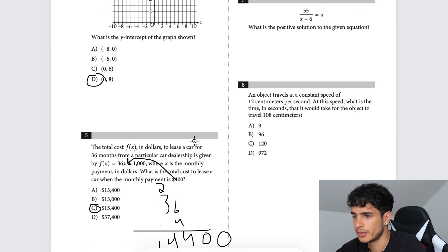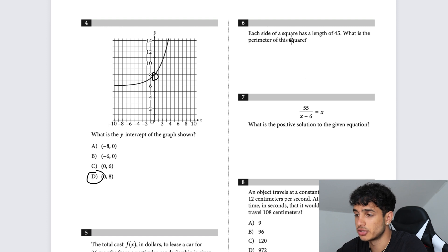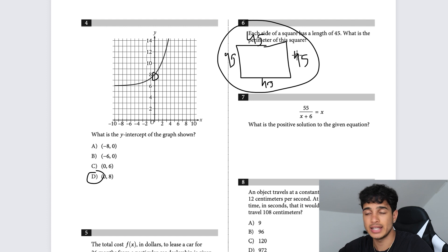Each side of a square has length 45. What is the perimeter of the square? You just add it all up: 45 plus 45 is 90, times 2 is 180.